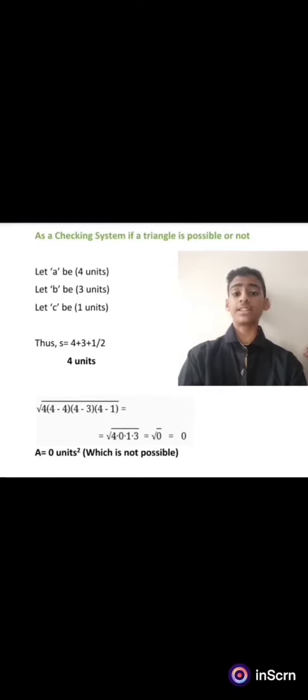The semi-perimeter we will get is 4 plus 3 plus 1 divided by 2, that is 4 units. Using Heron's formula, we will get the square root of 4×0×1×3, that is 0.